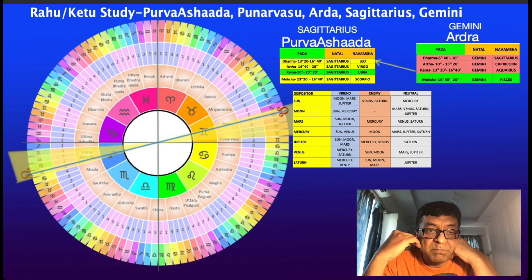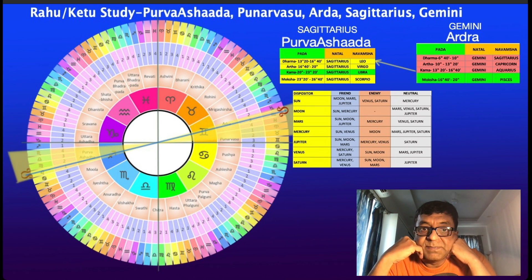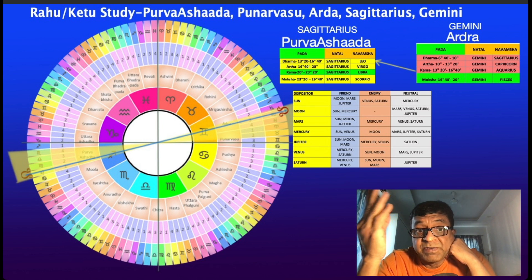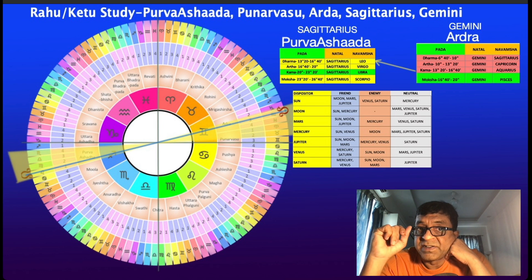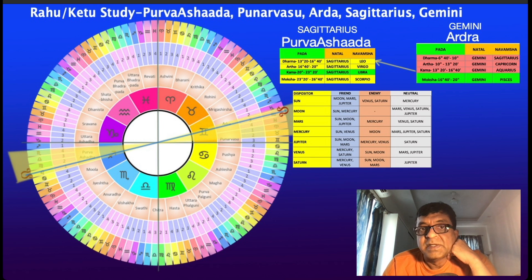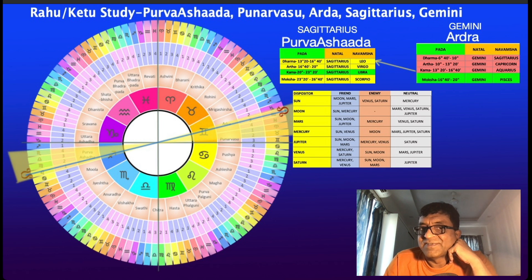Next we shall take up Mula nakshatra, which goes between Mrigashira and Ardhra — a very interesting one. Take care and be safe.